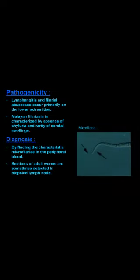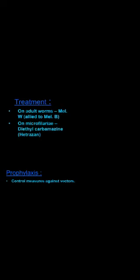Coming to pathogenicity, it is again similar to lymphatic filariasis — lymphangitis, lymphadenitis, lymphatic obstruction, and elephantiasis. Brugia malayi also causes lymphatic filariasis. Diagnosis depends on demonstration of microfilariae in the peripheral blood, or adult worms in sections of lymph nodes or soft tissue. Treatment is diethylcarbamazine (Hetrazan), which kills microfilariae. Prophylaxis includes health education, prevention of mosquito breeding, and use of mosquito nets.